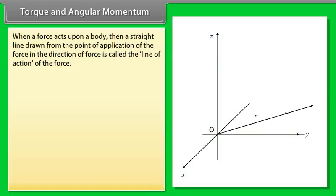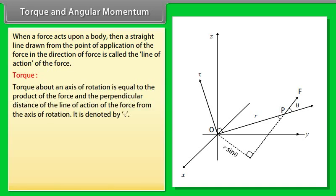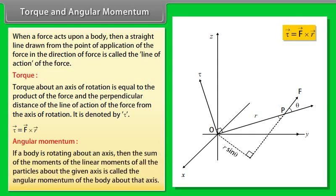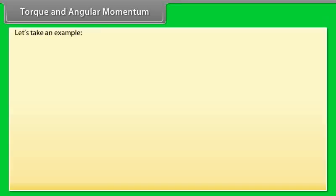When a force acts upon a body, a straight line drawn from the point of application in the direction of the force is called the line of action of the force. Torque about an axis of rotation equals the product of the force and the perpendicular distance of the line of action from the axis of rotation. It is denoted by τ: τ = R × F. Angular momentum: if a body is rotating about an axis, the sum of the moments of the linear momenta of all particles about that axis is called the angular momentum of the body about that axis.